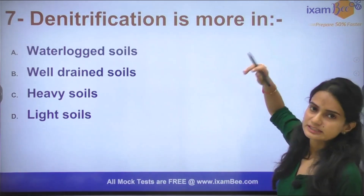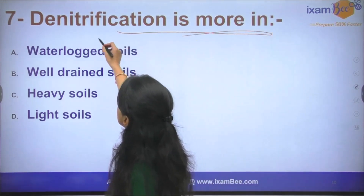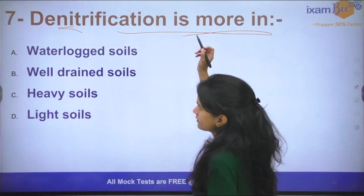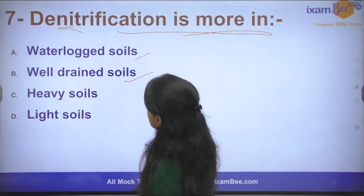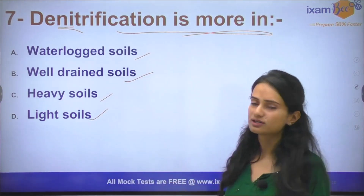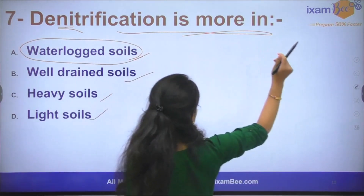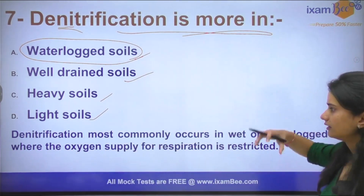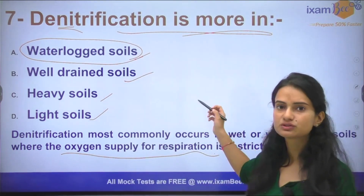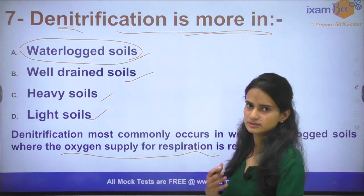Moving on to the next question: Denitrification is more in which conditions? The options are waterlogged soil, well-drained soil, heavy soil, or light soil. The process of denitrification is more in waterlogged soils because the oxygen supply is restricted for respiration, which is why the denitrification process is faster there.